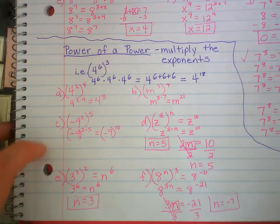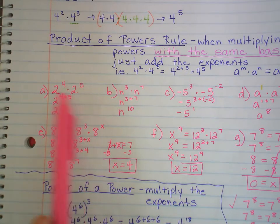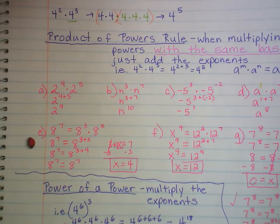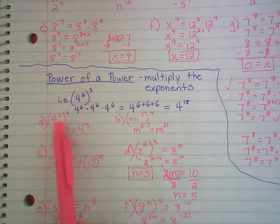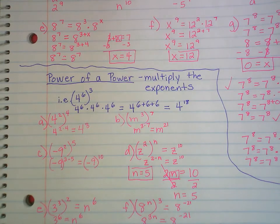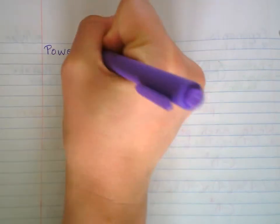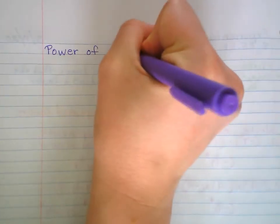So far we've learned the product of powers rule — when you're multiplying and they have the same base, add the exponents. And power of a power — when you have a power raised to another exponent or power, multiply them. The last one's really quick; you're not going to have a Khan Academy on this, but I still want to show it to you so you can have some exposure to it. It's power of a product.